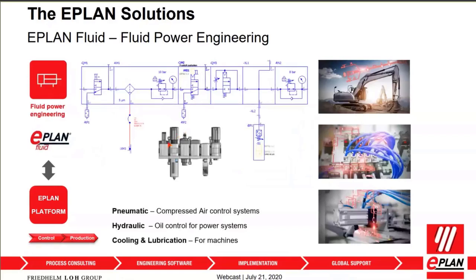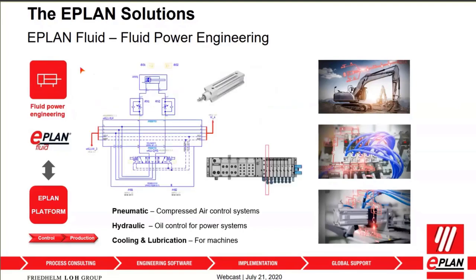Let's move on to ePlan Fluid. Fluid power engineering covers four topics: pneumatics, hydraulics, cooling, and lubrication — using air or oil to create movement and power transfer. ePlan provides libraries supporting ISO representation of symbology, and the nomenclature can be adjusted to your needs. You can design the complete control system from a pneumatic aspect — whether using valve manifolds, cylinders, or vacuum systems — to design all your pneumatic control systems.